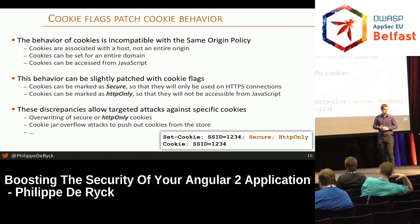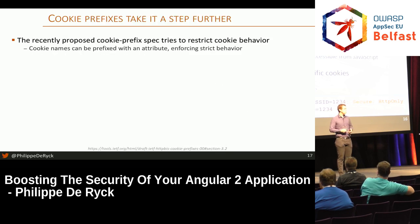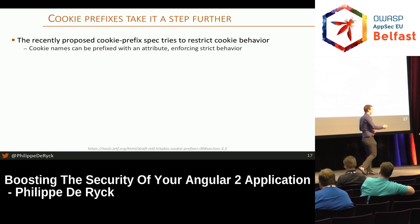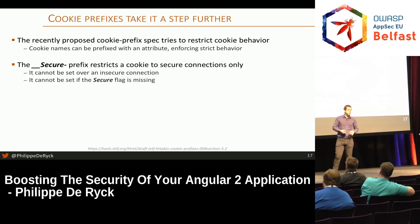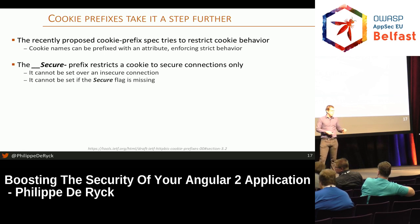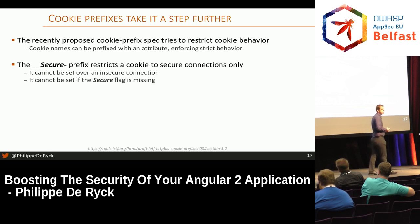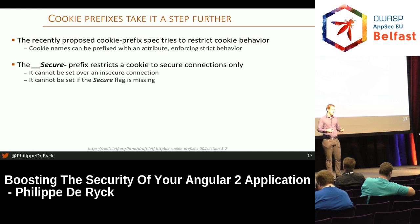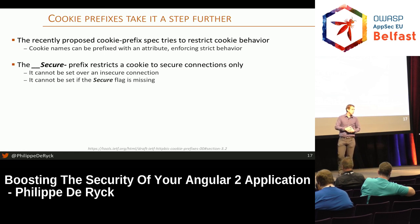Cookie prefixes add a prefix to the name of the cookie, ensuring that certain security properties are guaranteed by the browser. One of these prefixes is the Secure prefix — you can name your cookie __Secure-sessionid or whatever. Whenever that prefix is present in the name, a supporting browser will start enforcing strict rules. If this cookie is set over an insecure connection, the browser will refuse it — it needs to be set over a valid HTTPS connection. The Secure flag also needs to be present. If these conditions are not met, the browser will not set or remember the cookie, and a potential attack will be evaded.